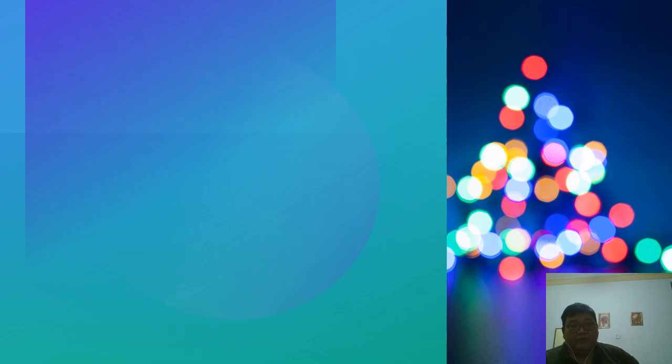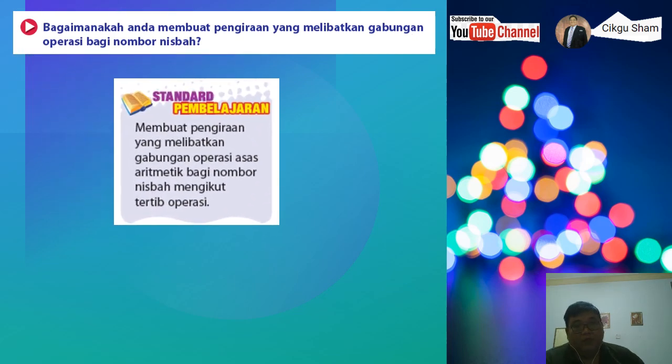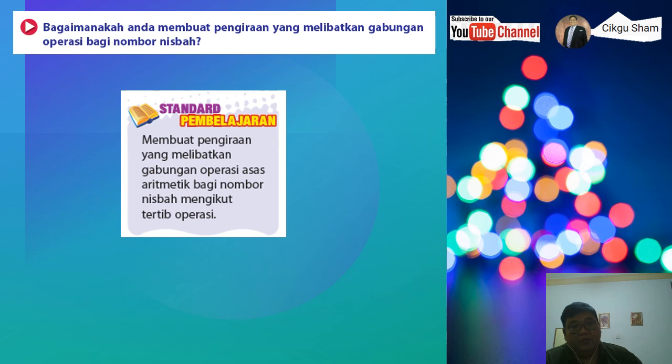Haa, penyebut tak boleh sifar. Kamu faham. Okay, sebab 1.5A ini baru pengenalan lah, baru kita nak tahu dia nombor nisbah ke tidak ya. Okay, kita teruskan. Baik, bagaimana kita membuat pengiraan yang melibatkan gabungan operasi bagi nombor nisbah? Maksudnya tambah tolak darab bahagi. Okay, dan mungkin juga ada kurungan. Okay, so standard pembelajaran, membuat pengiraan yang melibatkan gabungan operasi asas aritmetik bagi nombor nisbah mengikut tertib operasi. Siapa tertib operasi? BODMAS. Apa itu BODMAS? Siapa tahu, cuba jawab. Bracket, Order, Division, Multiplication, Addition, Subtraction.